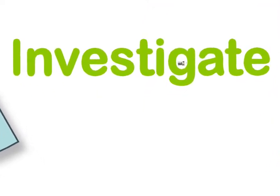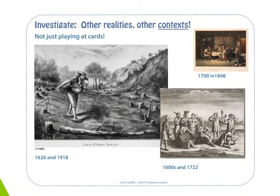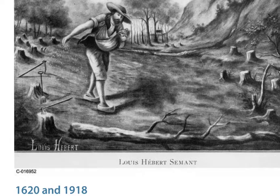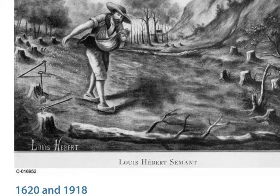A detective must investigate by going further than this one reality into what we call other contexts. For example, the French Canadians weren't just playing cards — there were other realities at the same time. This allows us to contextualize the first reality. For example, they were relaxing in the evening after a day of hard work on the farm, or possibly clearing land, as in this picture of one of the earliest habitants farmers.